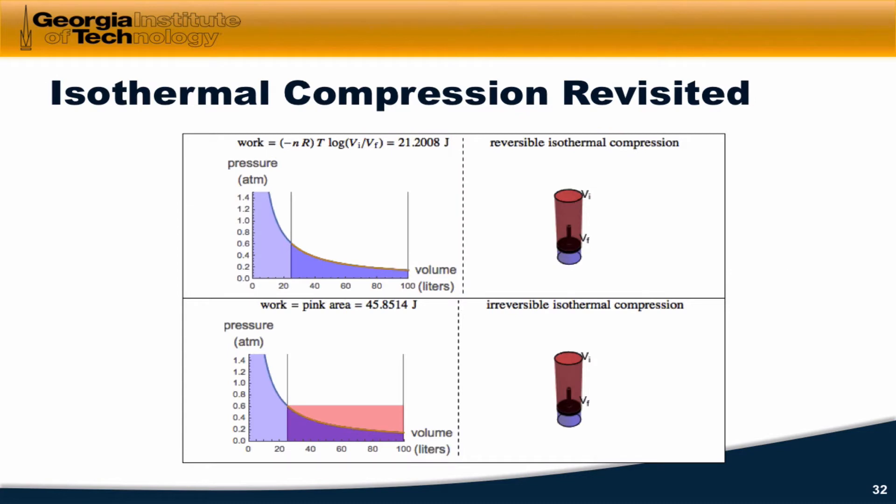These two processes of compressing a gas from a larger initial volume to a smaller final volume are compressions, and they were done at constant temperature, so they're known as isothermal compression paths. At the top we have path two, which is the path where we made sure using grains of sand that at every point the external pressure and the gas pressure were equal. The bottom path is the irreversible isothermal compression, which happened rapidly — the external pressure was larger than the gas pressure everywhere except at the very end of the process.